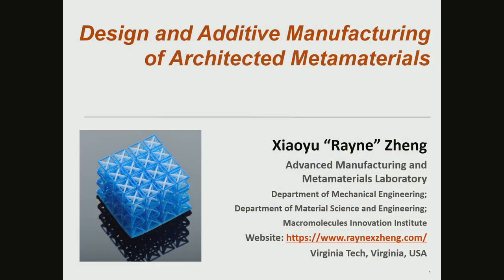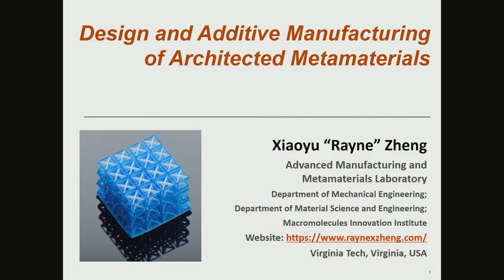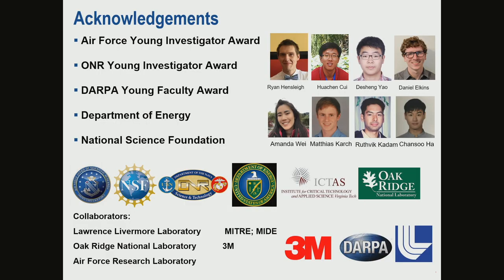I'm Rain Zeng, currently at Virginia Tech. My group does work on additive manufacturing and metamaterials. Architected metamaterials are a suite of materials with design topology and microarchitectures — connecting two key features: design topology and feature size, both of which play a very key role in design of new materials. I would like to thank all our funding agencies as well as my graduate students and postdocs who did most of the work I'm going to talk about today.